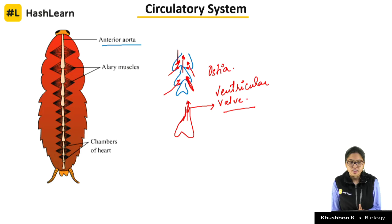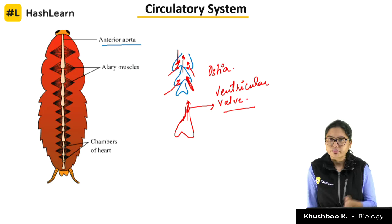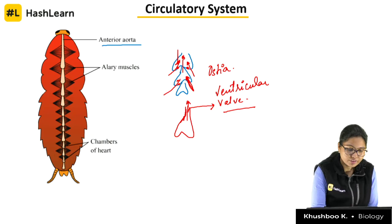Priya, we have just started the class and we are already into the circulatory system. The circulatory system of cockroach has 13 chambers. Posteriorly each chamber has 2 ostea through which blood enters the heart, and anteriorly through ventricular valves it passes to the next chamber.